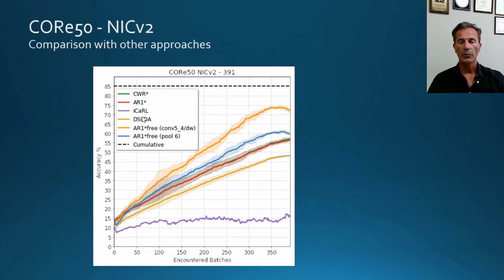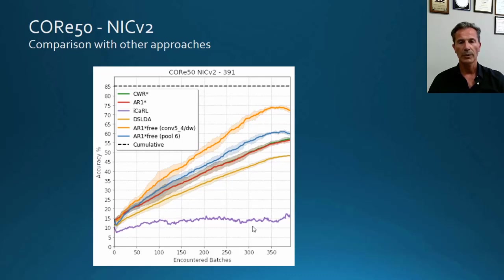Here we are comparing the accuracy of AR-1 with other techniques including iCaRL. Unfortunately, iCaRL was not conceived to work under the NIC setting, so we made some modifications, but were not able to achieve learning in this difficult scenario with 391 batches.